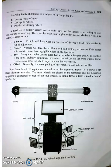There are basically four angles which decide whether a vehicle is properly aligned or not. The first is camber — the vehicle will have wear on one side of the tire tread if the camber is out of adjustment. The second is caster — the vehicle will face problems with self-centering and wandering if the caster is incorrect.